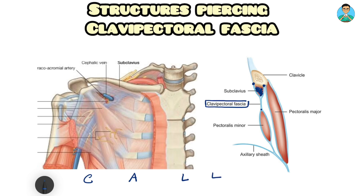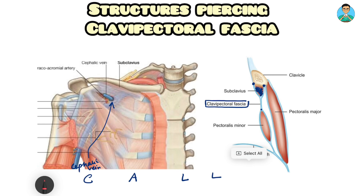The first C stands for the cephalic vein, as you can see over here. The A represents an artery, and the artery is the thoracoacromion artery, as you can see over here.